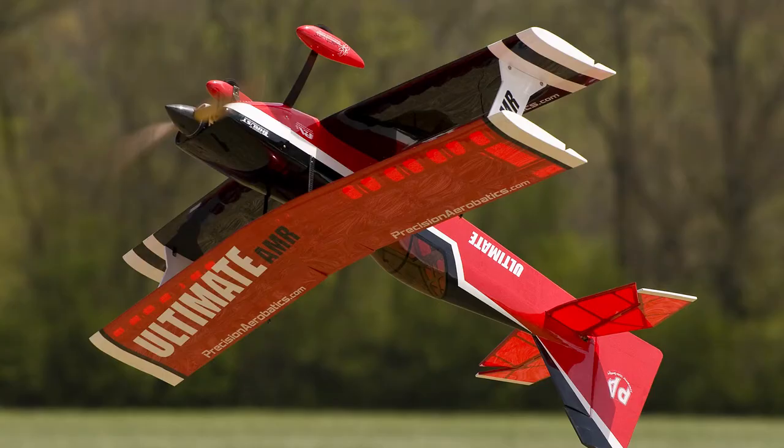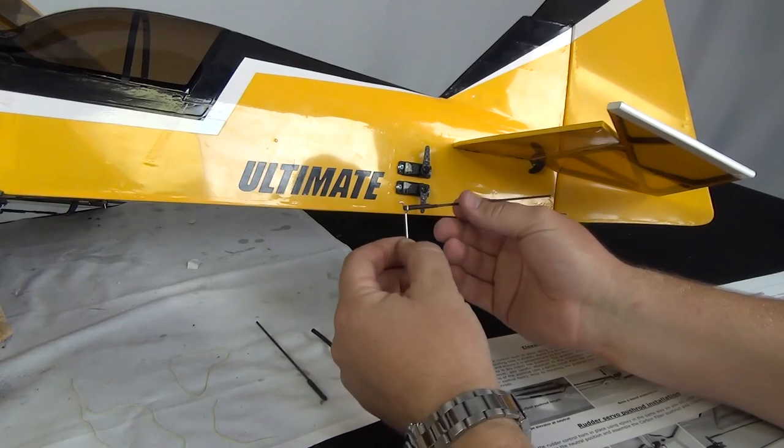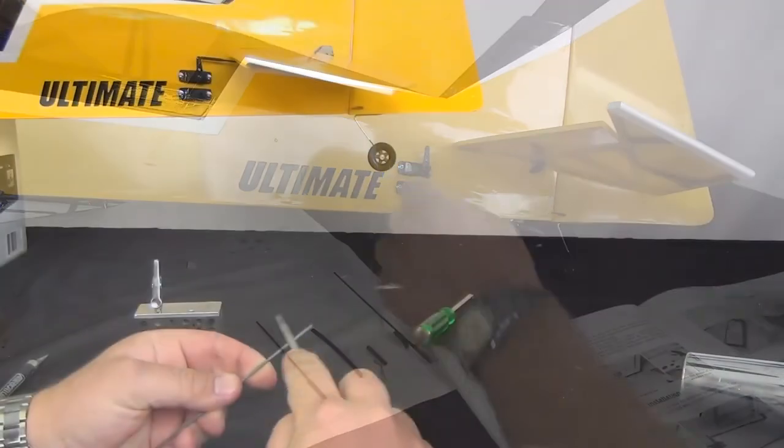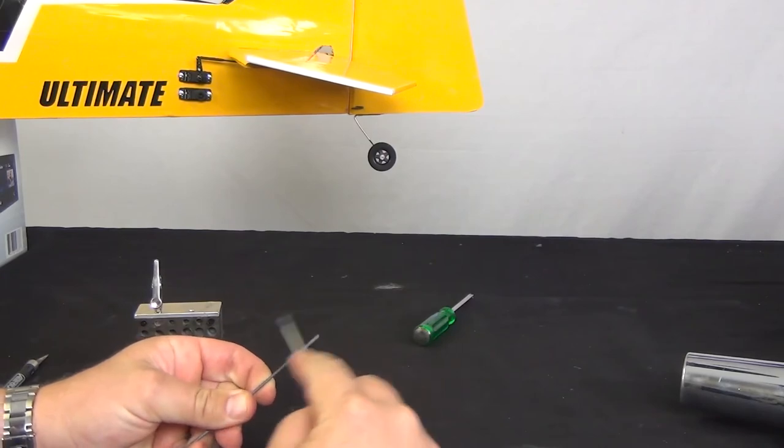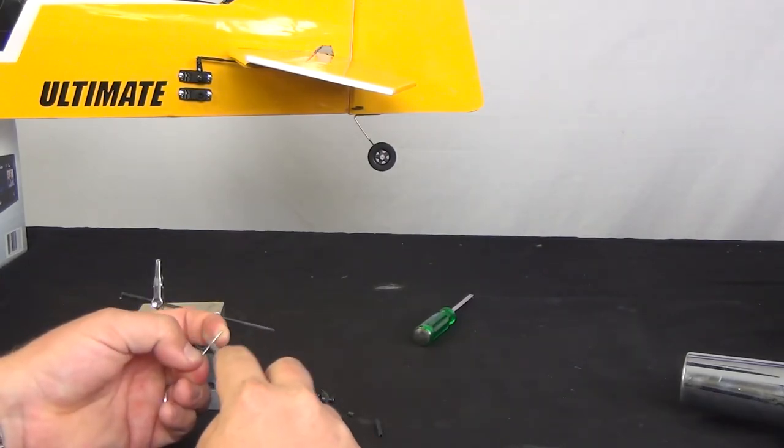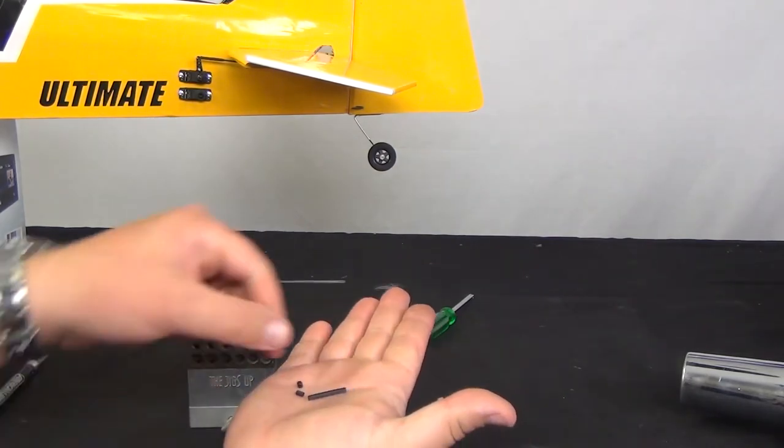For models such as the Ultimate AMR, Z-Bend linkages are used. The arm extensions build the same way, and half of this linkage has been made for you at the factory. We can get started by prepping the other half. I recommend you start by roughening up the carbon fiber rod end and the wire where they will be joined. This will ensure the strongest possible linkage.